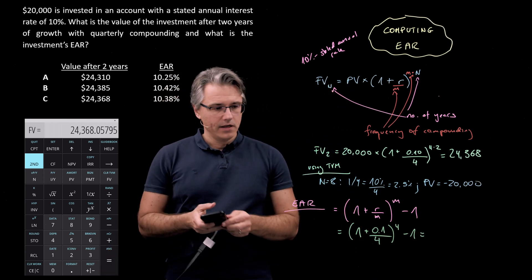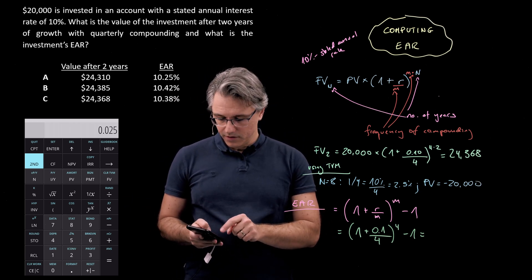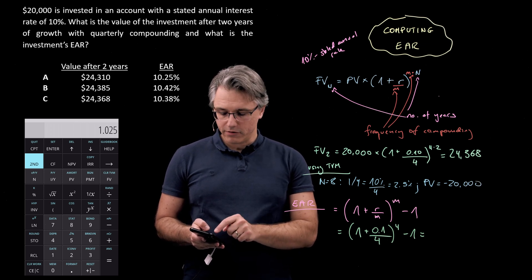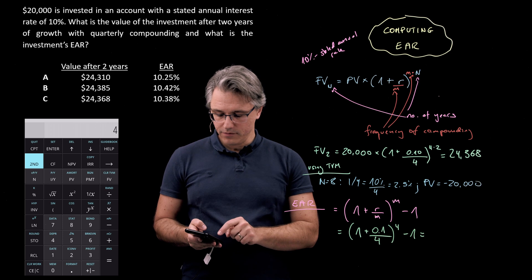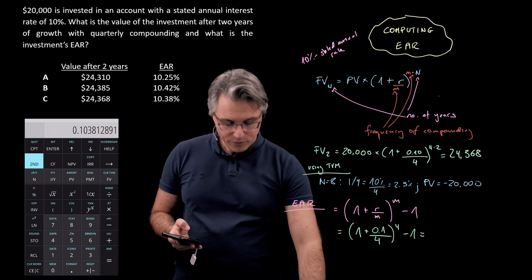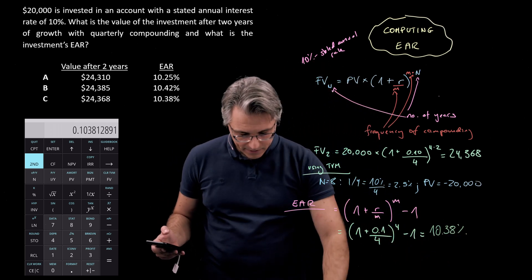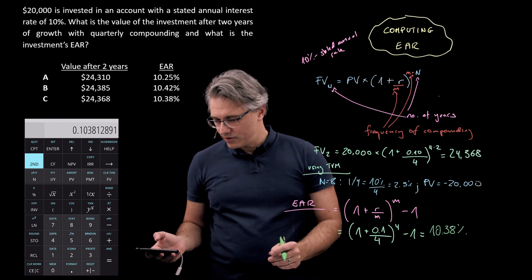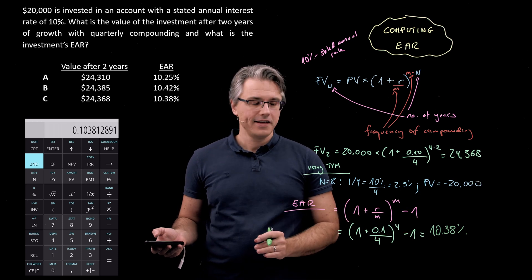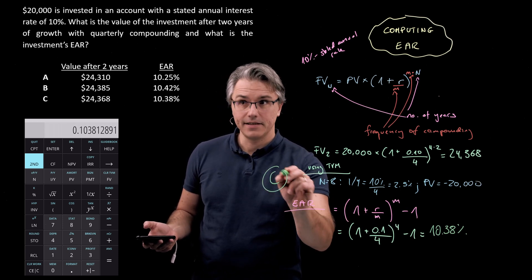Let's see what this gives. 0.1 divided by 4 plus 1 to the power of 4, so y to the power of x and 4 equals minus 1. And that's 10.38 percent. When you look at the possible answers to this question you can see that the combination of 24,368 and 10.38 is very much in line with answer C.